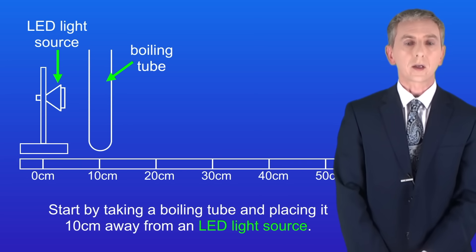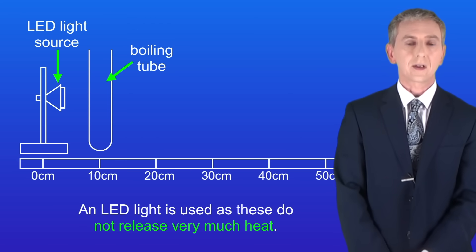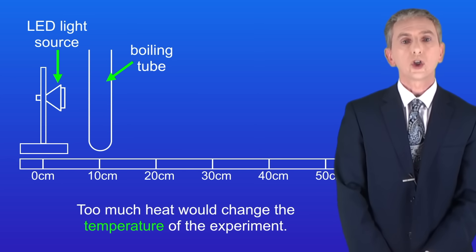We start by taking a boiling tube and placing it 10 centimeters away from an LED light source. An LED light is used as these don't release very much heat. Too much heat would change the temperature of the experiment.